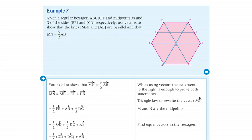First, you need to use the triangle laws to rewrite the vector MN. The vector MN equals the vector ME plus the vector ED plus the vector DN.